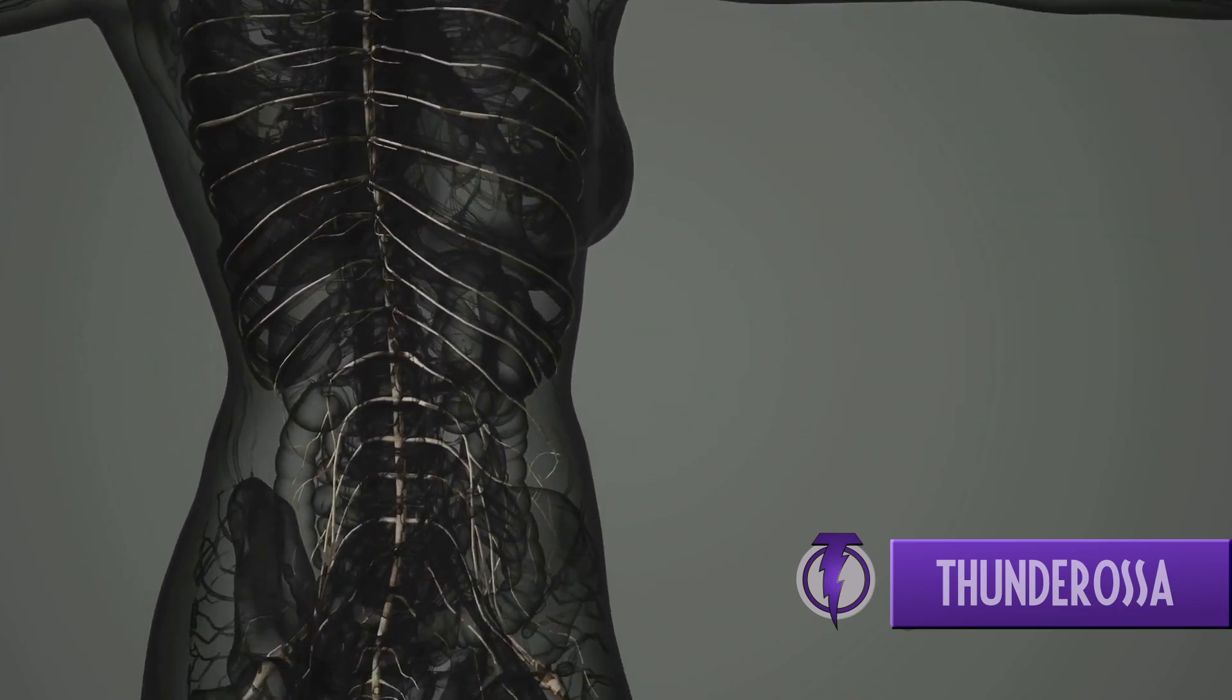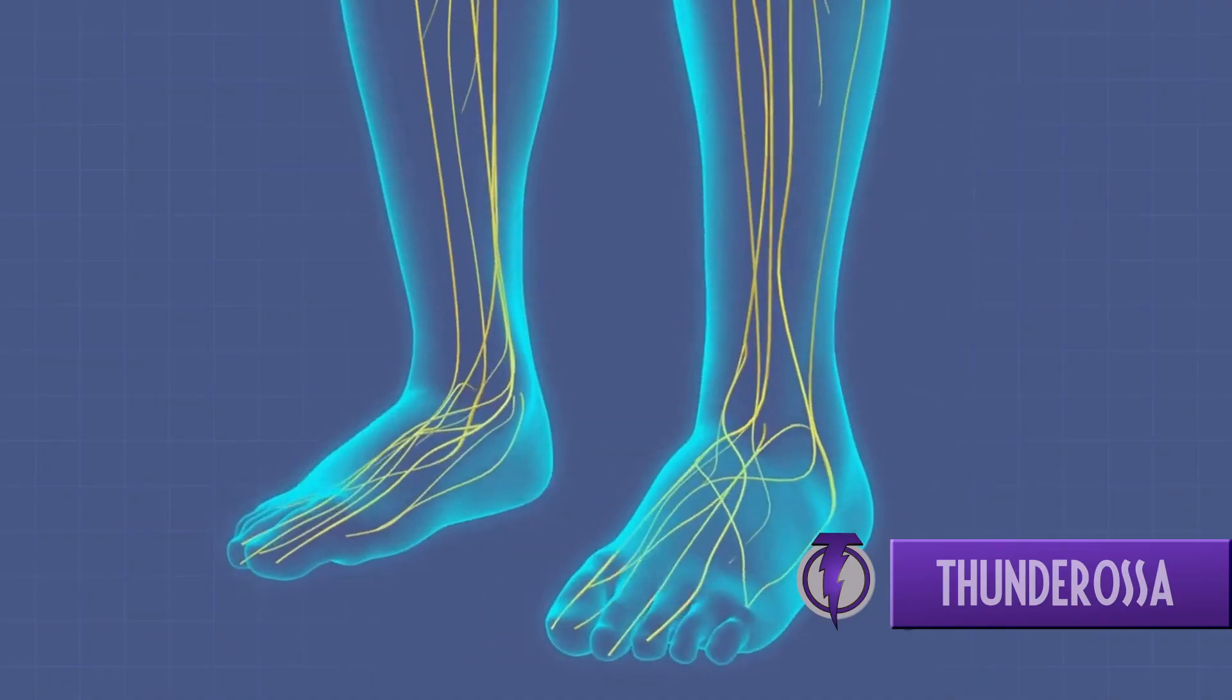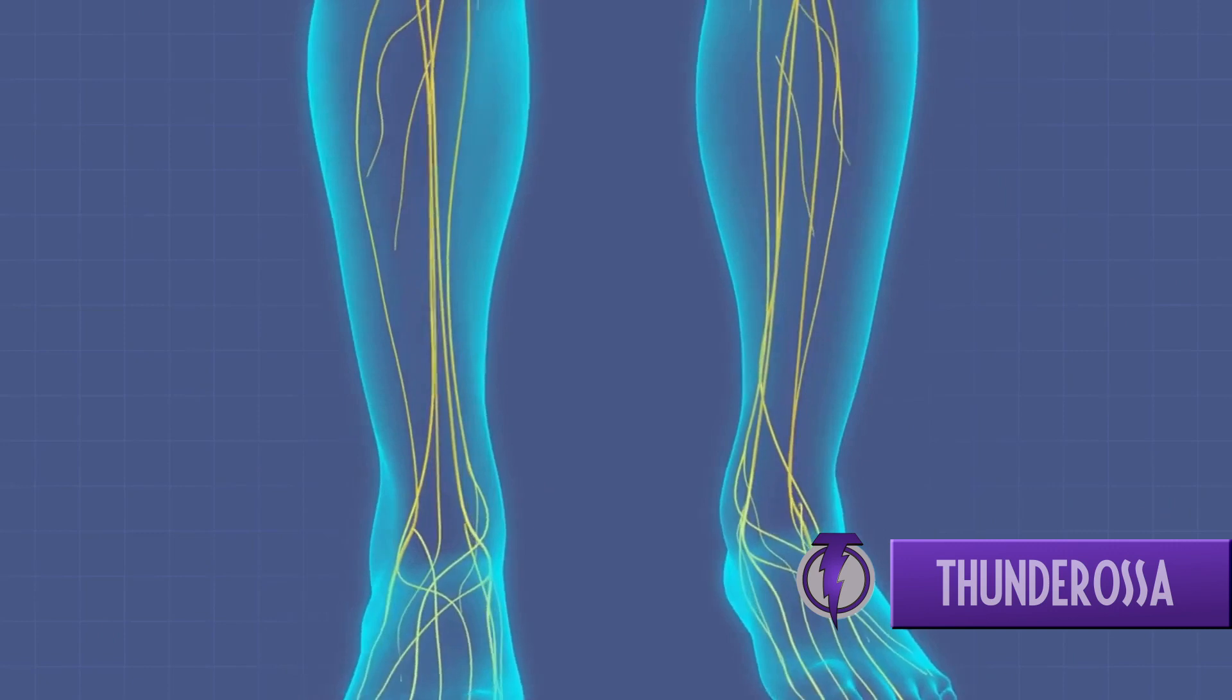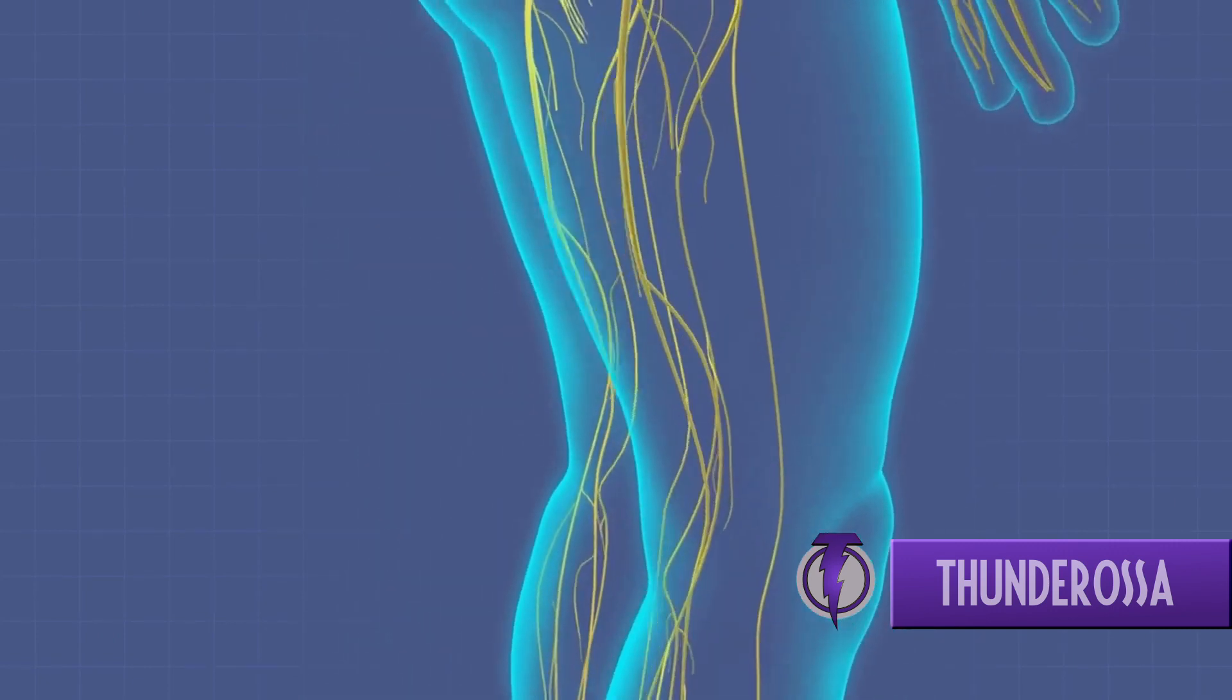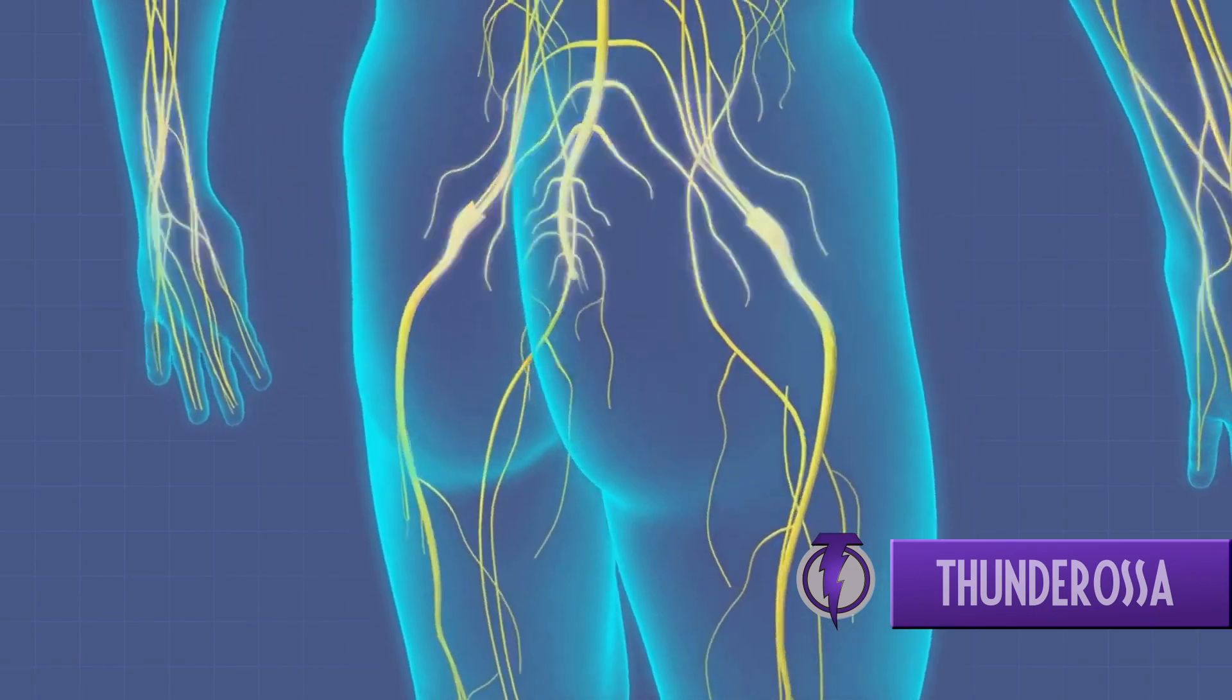On the other hand, we have the peripheral nervous system. It's the courier, connecting the central nervous system to every nook and cranny of your body. It ensures that messages from the brain reach your fingertips and toes and vice versa.